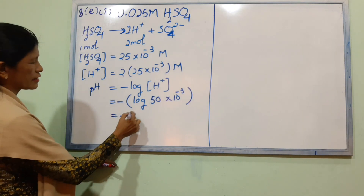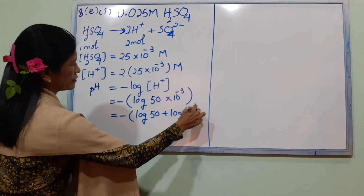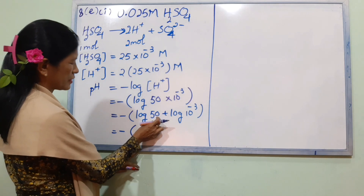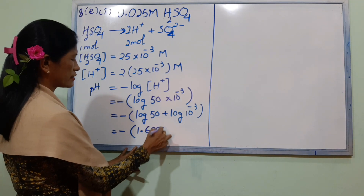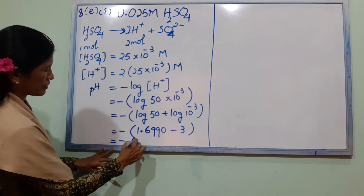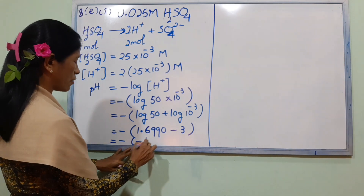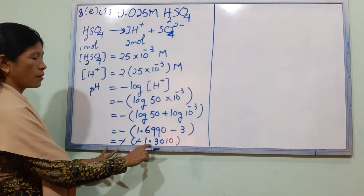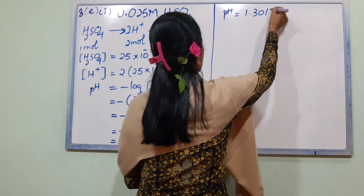The H⁺ ion concentration gives us pH = −log(5 × 10⁻²) = −(log 5 + log 10⁻²) = −(0.699 − 2) = −(−1.301) = 1.301. So pH ≈ 1.3010.